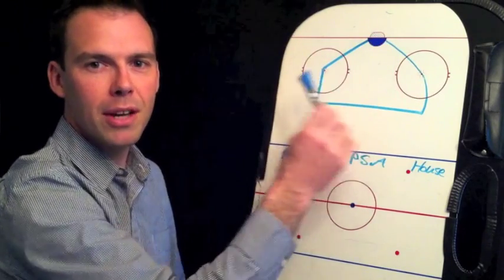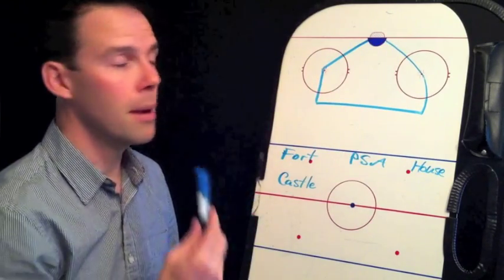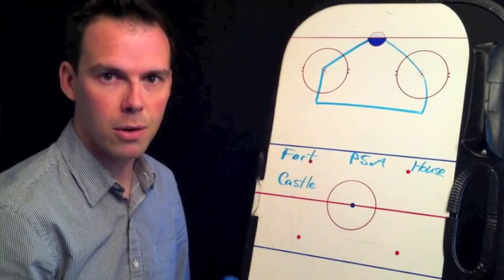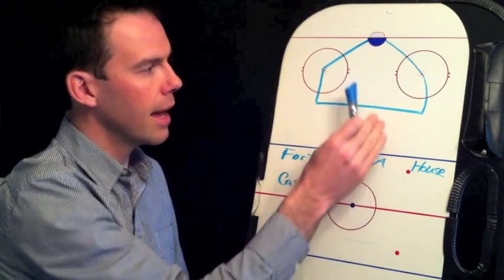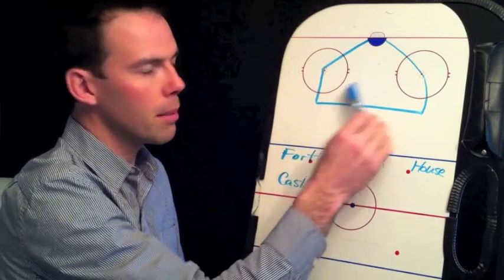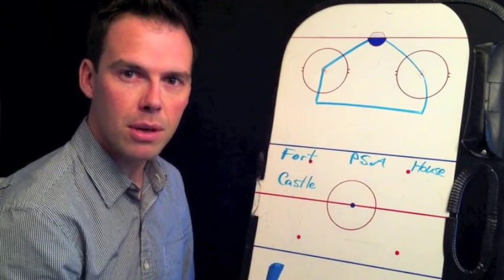This is the most important area to defend. We often say back to the fort, come back to the house. We back check through the middle of the ice to this area and when in trouble we come back to this area in the defensive zone as well.